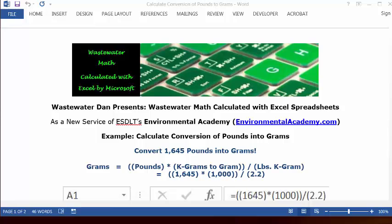This conversion problem is going to be set up as a calculation in a formula. In the formula, we're going to solve for grams. So we're going to set up a formula where grams equals pounds times the conversion from kilograms to grams.